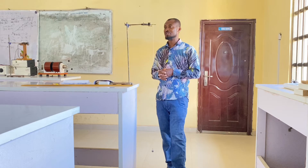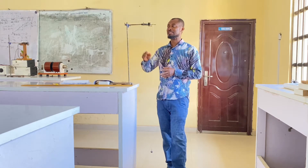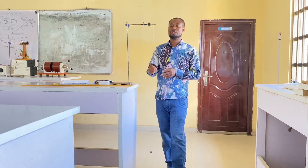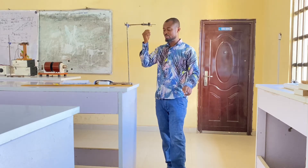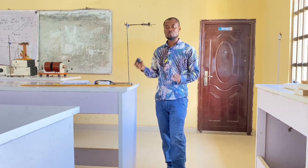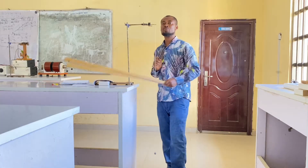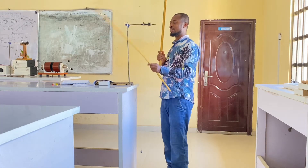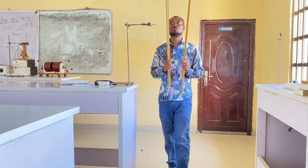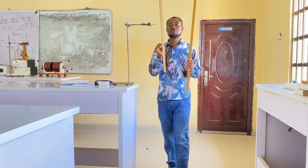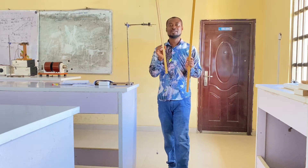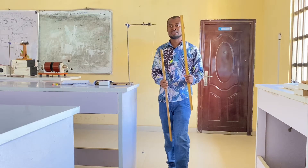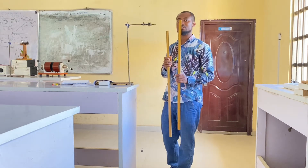The apparatus needed for this experiment are: a retort stand, the cork, the thread, the ball, a stopwatch, and two meter rules of 1 meter each. We will be needing up to 120 cm for this, and since 1 meter is 100 cm, we need both rules combined.